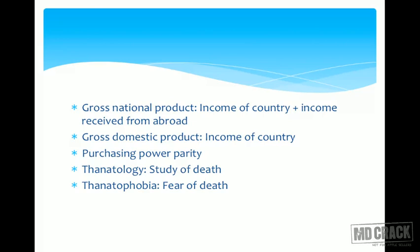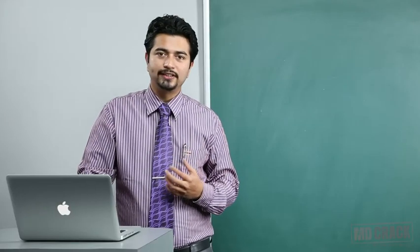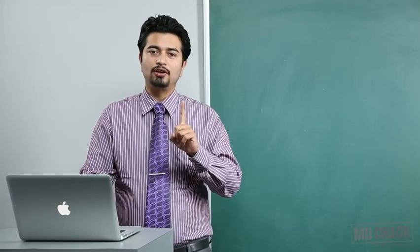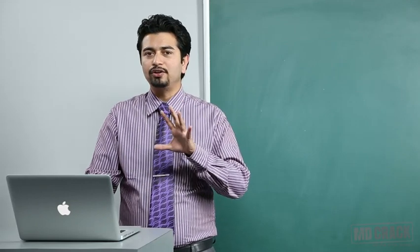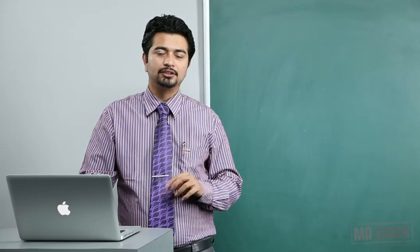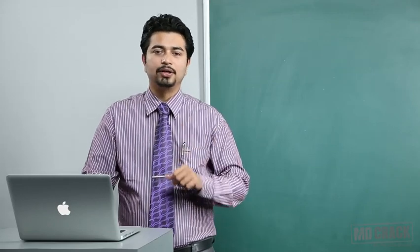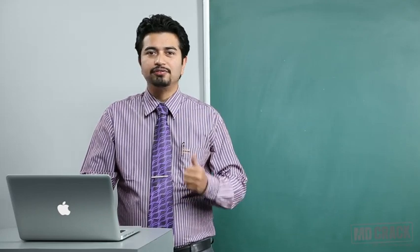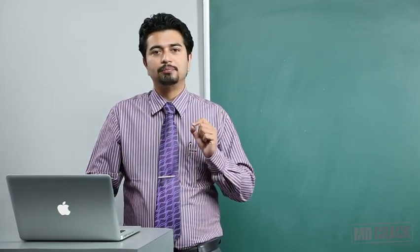Gross National Product (GNP) is the income generated inside the country plus what is earned outside — that is, Gross Domestic Product plus income from abroad. Gross Domestic Product (GDP) is just what is produced within the country. Purchasing Power Parity (PPP) is the units of currency needed to purchase on the local market what one dollar would buy in the US. For example, if one dollar buys ten items in the US and you need 50 rupees to buy those same items, the purchasing power parity is 50.